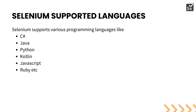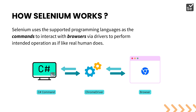Selenium also supports many different programming languages, and the one we are going to discuss is C-sharp. If you are familiar with other programming languages, you can easily relate to Selenium with those language bindings as well. Now let's understand how Selenium really works. Selenium uses the supported programming language as the command to interact with browsers via a driver to perform the intended operation, as if a real human were doing it.